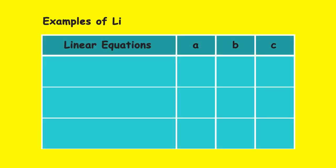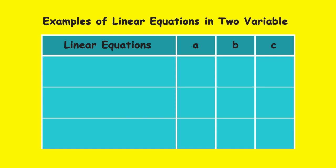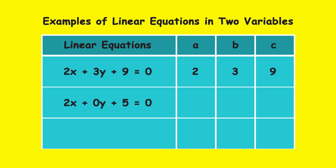Now look at three different examples of linear equations in two variables. By comparing the first equation, 2x plus 3y plus 9 is equal to 0, with the general form, we get the values of A, B, and C as 2, 3, and 9 respectively. In the second equation, 2x plus 0y plus 5 is equal to 0, the values of A, B, and C are 2,